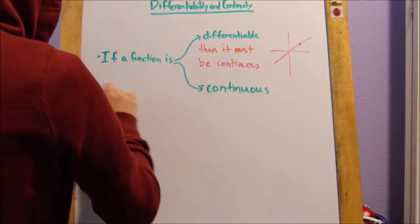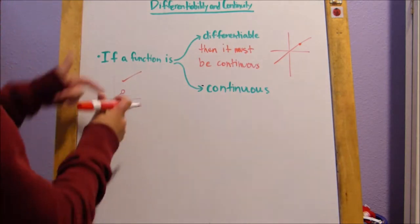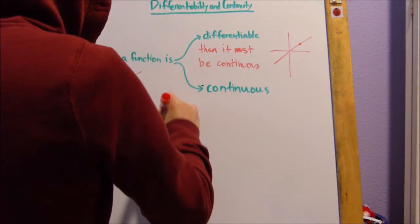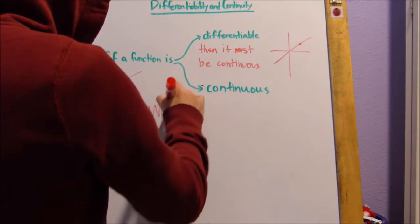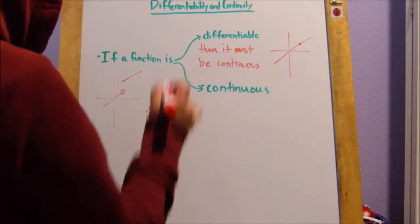You can't take a derivative of, say, something like this, right? These two don't match up. You can't do something that's oscillating like this. You can't find the derivative of that. It might be this, it might be that, it might be this.